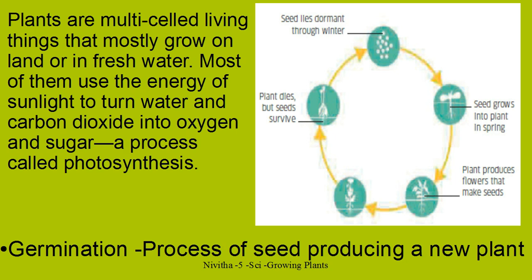Fifty percent of all living things are found in the sea. Most plants use the energy of sunlight to turn water and carbon dioxide into oxygen and sugar — a process called photosynthesis. And so they grow. They also store food as they grow and keep it stored. They mature and then produce flowers, seeds, and fruits. And these seeds give rise to new plants.